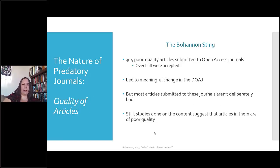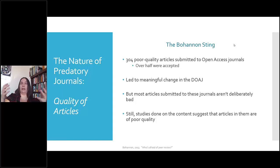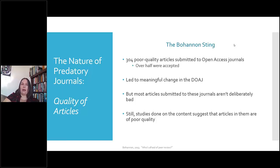In terms of the quality of articles in predatory journals: in 2013, John Bohannon did a sting operation where he wrote a poor-quality article and submitted it to 304 open access journals. Over half accepted it. His view was that any genuine peer review would have caught the glaring errors. This sting led to meaningful change in the Directory of Open Access Journals, which is now much more careful about which journals it accepts.